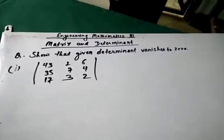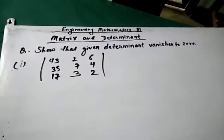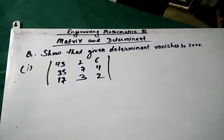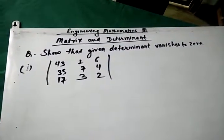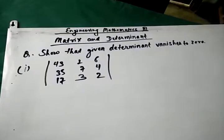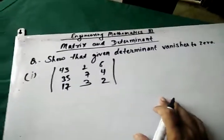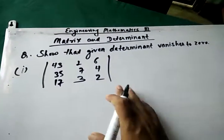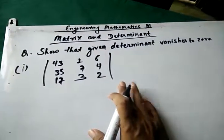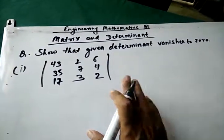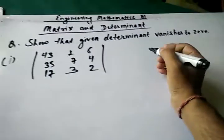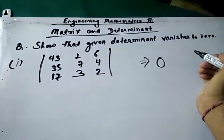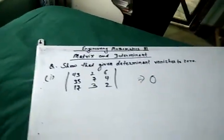Hello guys, welcome to ASP Hero. Today we are going to solve a problem of engineering mathematics third, in the topic of matrix and determinant, where we have to show that the given determinant vanishes to zero — that is, while solving this determinant we will get the answer zero.